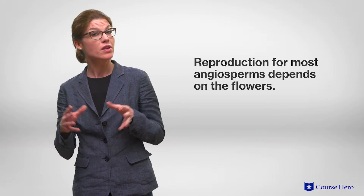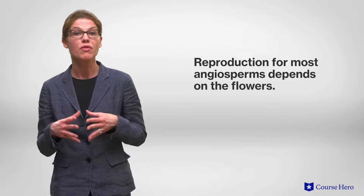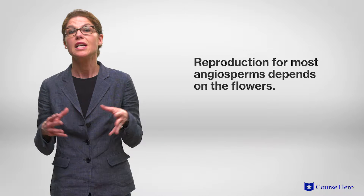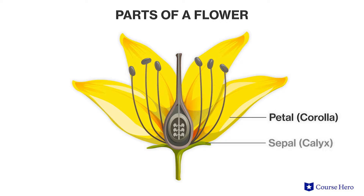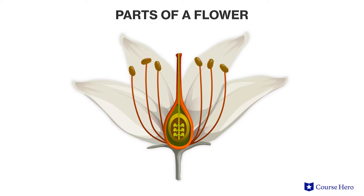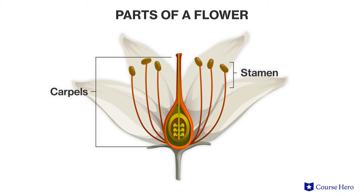Reproduction for most, but not all, angiosperms depends on flowers. As a flower blooms, an angiosperm's life cycle begins. Let's take a closer look at the flower, a structure specialized for sexual reproduction. Flowers are a combination of both sterile tissues, which include the petals and sepals, and reproductive tissues, which include the carpels and stamens.